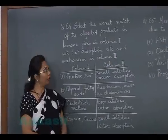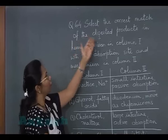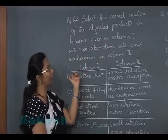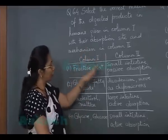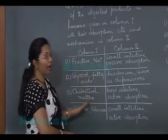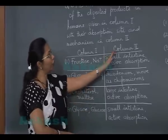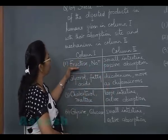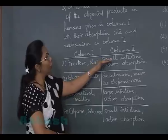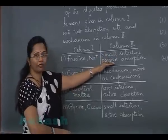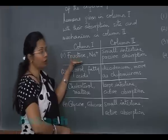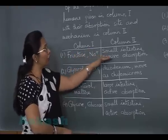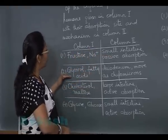Question number 64: select the correct match of digested products with their absorption site and mechanism. Column 1 lists end products of digestion and column 2 lists the site and mechanism of absorption. Option one — fructose and amino ions absorbed in the small intestine by passive absorption — is incorrect, because fructose absorption is by facilitated transport requiring sodium ions.